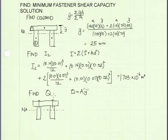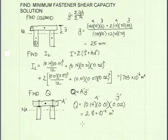The next step is to find Q. Q equals A-prime times y-bar-prime. What we're interested in is the capacity of these fasteners, so we're interested in finding the shear flow right at the joints where the fasteners pass through between the two members, because that's where the shear on the fastener occurs. Our A-prime is drawn so that the boundary crosses those two joints. This shaded area is the area used for A-prime, and y-bar-prime is the distance from the centroid of that shaded area to the neutral axis. We get Q equals 2.8 times 10 to the negative fifth meters cubed.